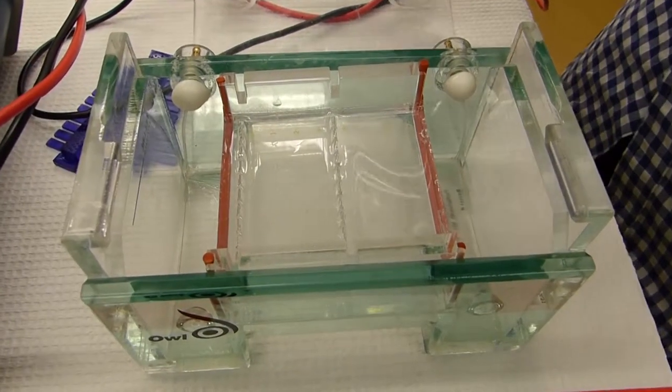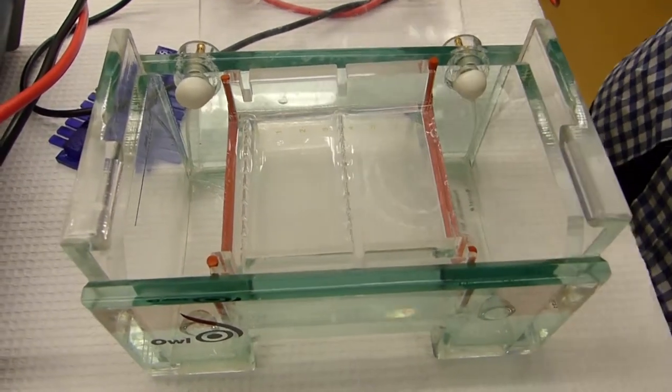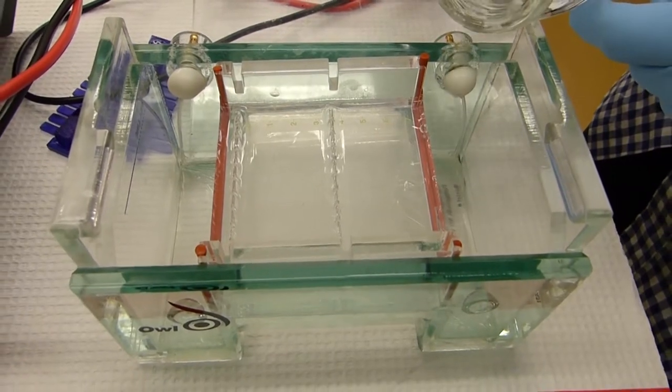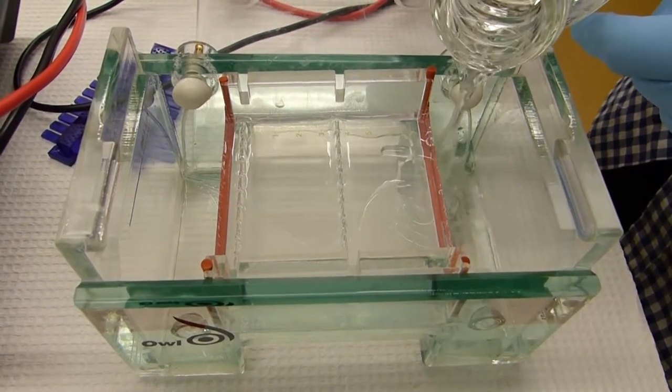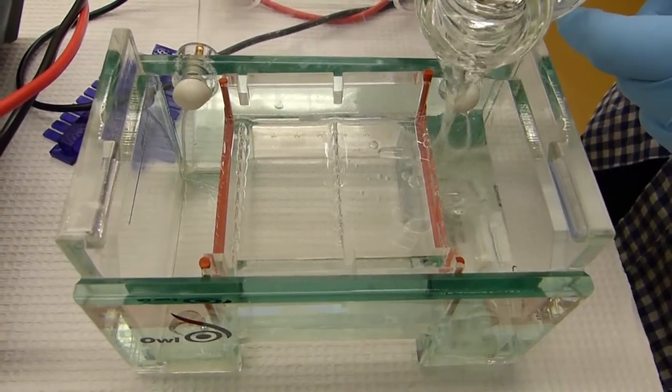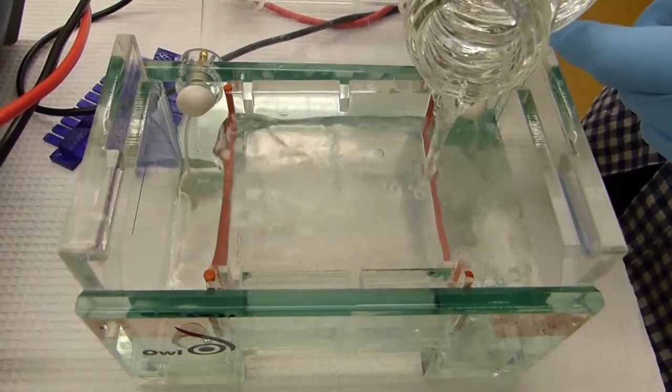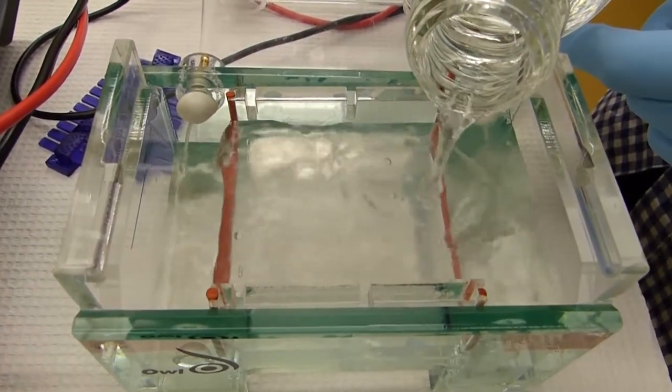Once the gel is set, you add your running buffer which is 1X TAE which will be sitting by the gels. You can add this to one side, on top, to both sides. And you just add it till it reaches the fill line marked on the side of the box.